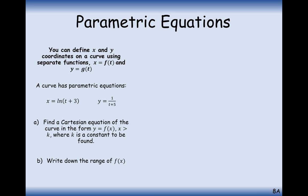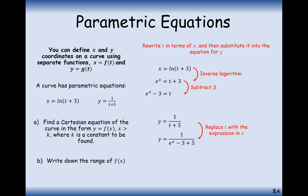The first thing I would do here is rewrite out x, and just rearrange it a little bit. So, we've got t equals something to do with x's. In this case, e both sides and subtract 3. e to the x minus 3 equals t. And then what we're going to do is take this t and substitute it into the y-equation. So, e to the x minus 3 plus 5. Do the simplification of the two numbers on the bottom there. And we're going to get 1 over e to the x plus 2.